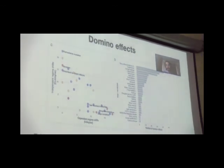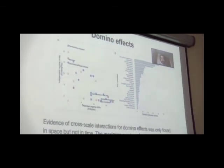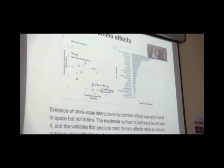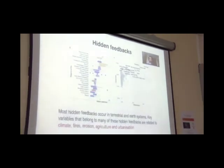Then in terms of the domain, variables that are mediating these domino effects, we found that of course climate is important, but also the transport of water and nutrients. So climate is not the only important factor of coupling regime shifts.